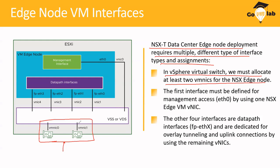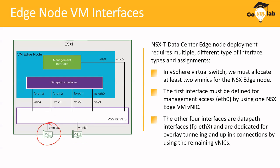If you only have a single vNIC connectivity and that uplink goes down, you have downtime. That is why you should always have at least two uplink connectivity, for redundancy and failover. The first interface must be defined for management connectivity, and the other four interfaces are data path interfaces dedicated for overlay traffic and uplink connectivity.